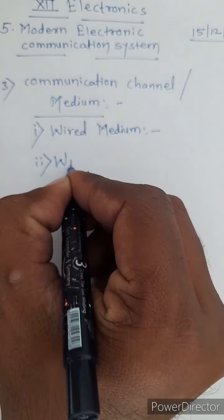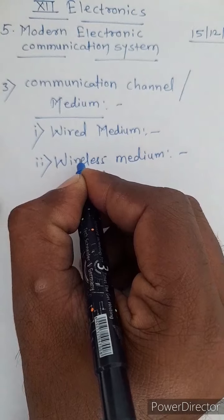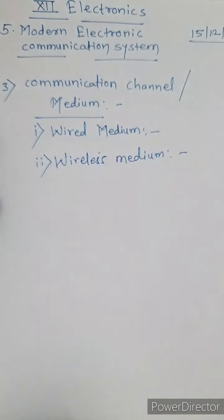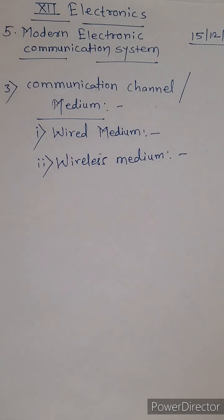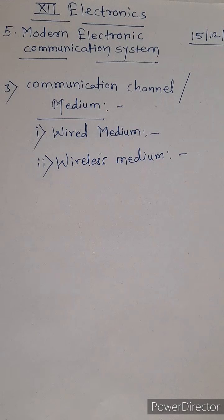There are two types: wired medium and wireless medium. In a wired medium, the communication system uses wires or cables. As we learned in physics, optical cables are used. Generally, cables used are UTP and STP twisted pair cables, and nowadays we use optical fiber cables for maximum bandwidth so that maximum data can be transmitted.